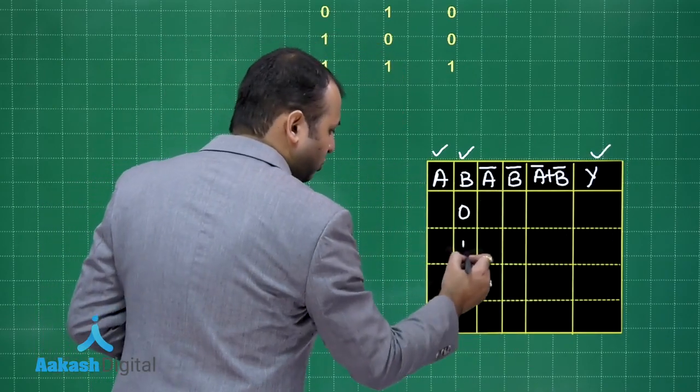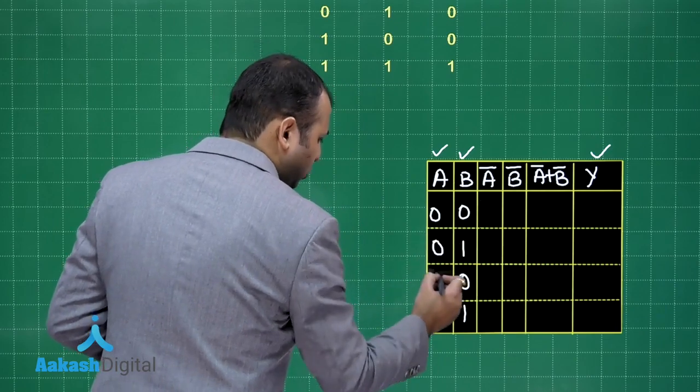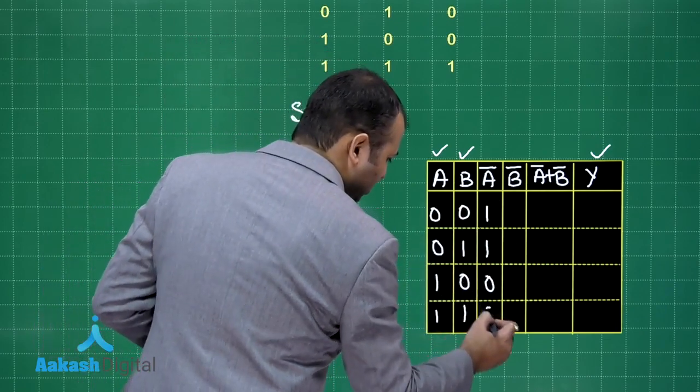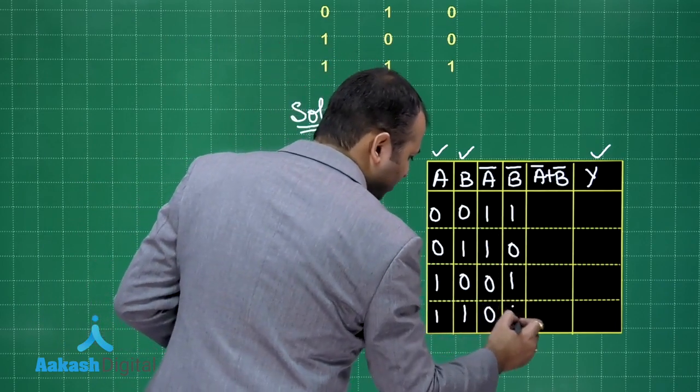Let us take 0, 1, 0, 1. 0, 0, 1, 1. So what is A bar would be? 1, 1, 0 and 0. This is B bar would be 1, 0, 1, 0.